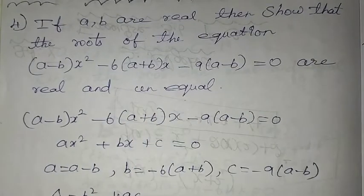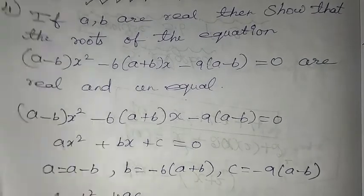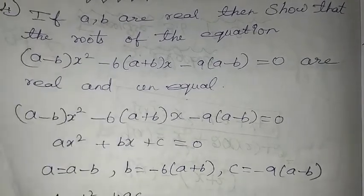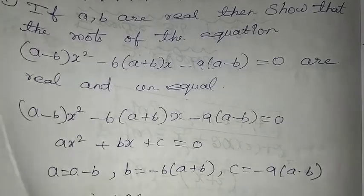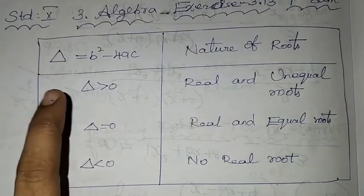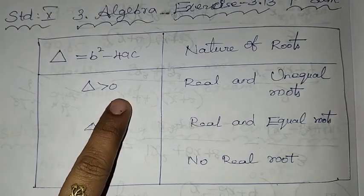So, we already know this is the discriminant value. Delta is equal to b square minus 4ac. For the roots to be real and unequal, the delta value should be greater than 0.